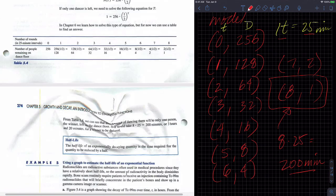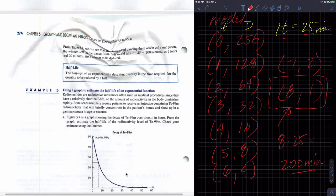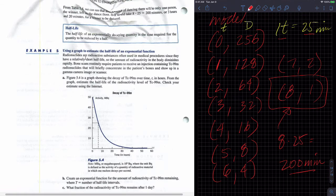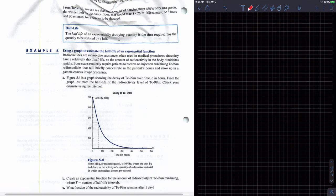And so we want to talk about half-life. Let's do this and get the next example going here. When we talk about half-life, the half-life of an exponentially decaying quantity is the time required for the quantity to be reduced by half. Which we already discussed a couple, three times already.